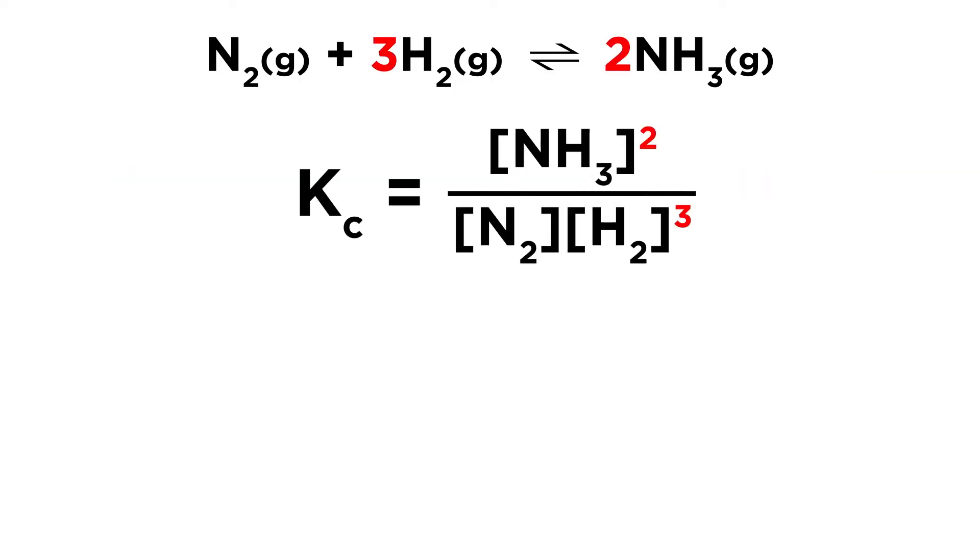So in this case, we have our equilibrium constant being equal to the concentration of ammonia squared, because ammonia has a coefficient of 2, over the concentration of nitrogen times the concentration of hydrogen raised to the third power, because hydrogen has a coefficient of 3.